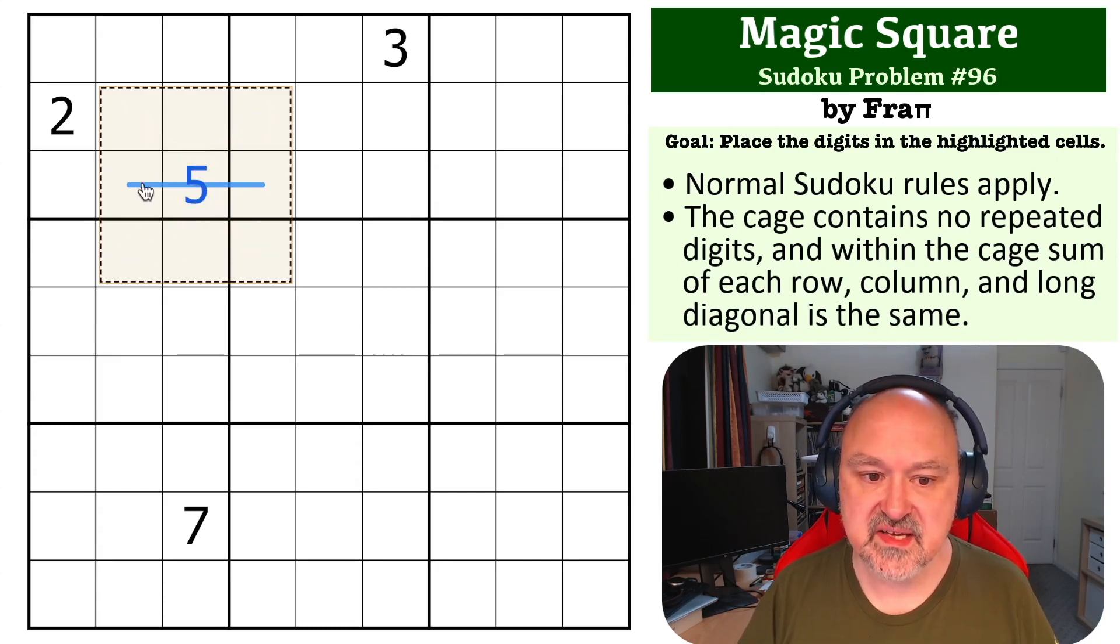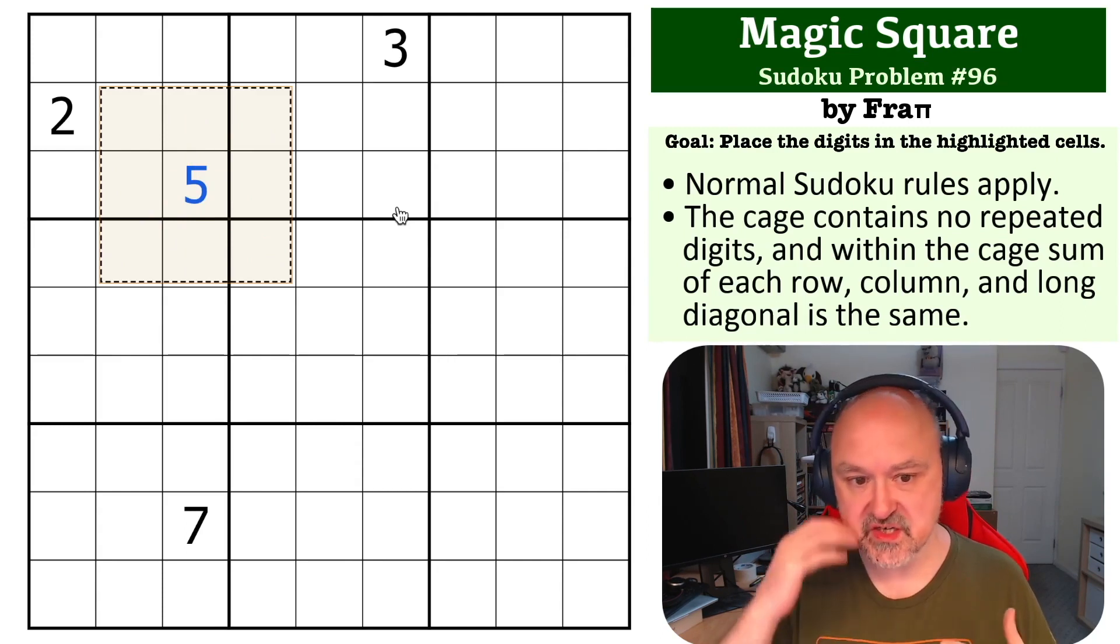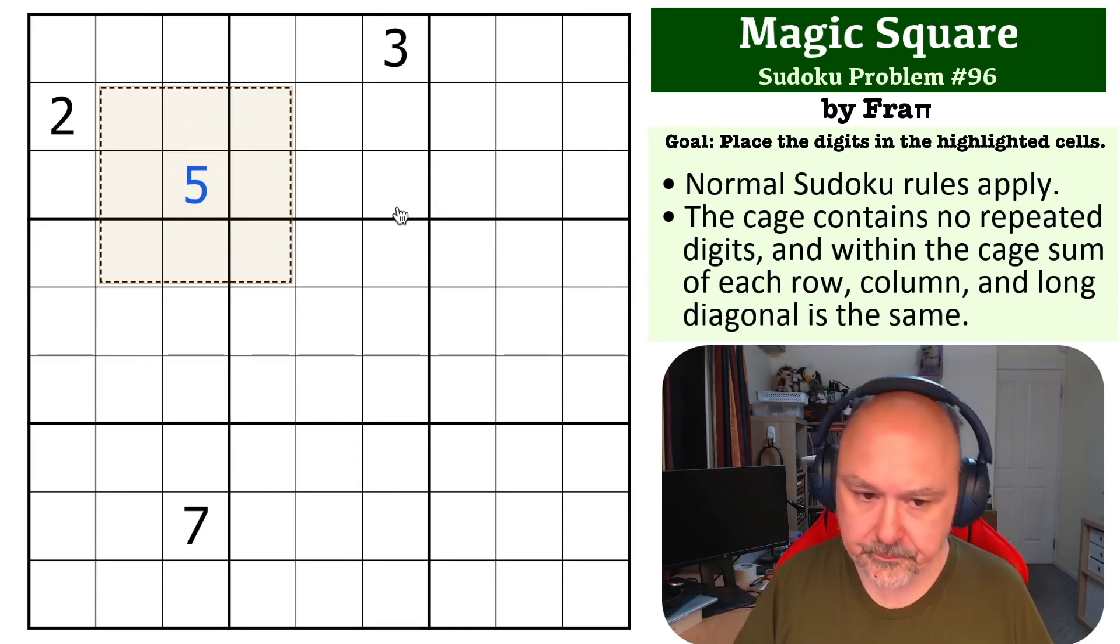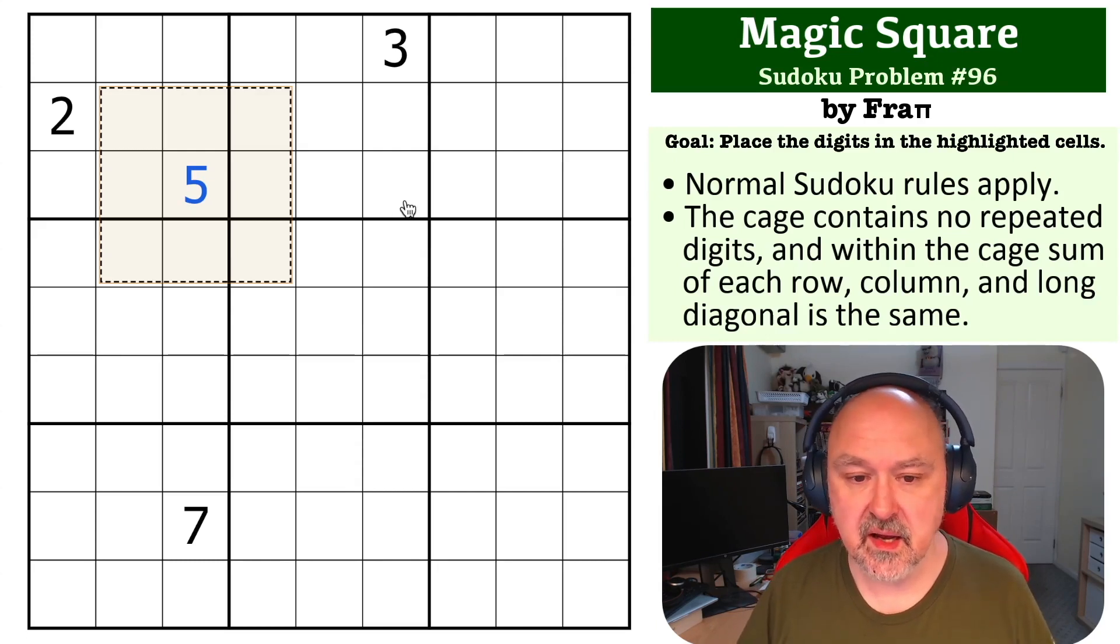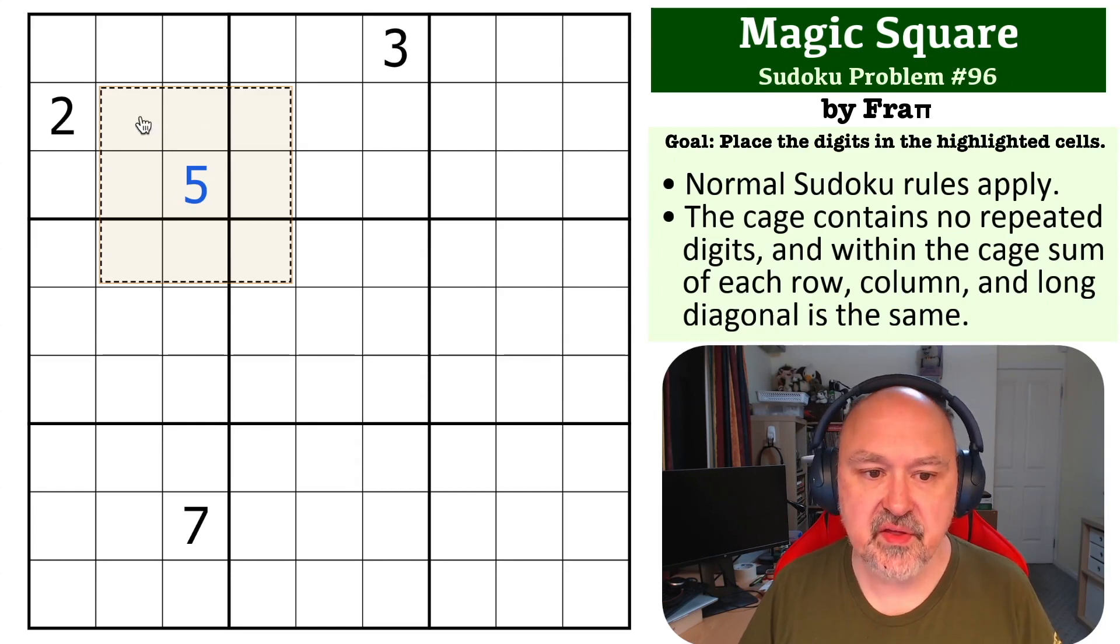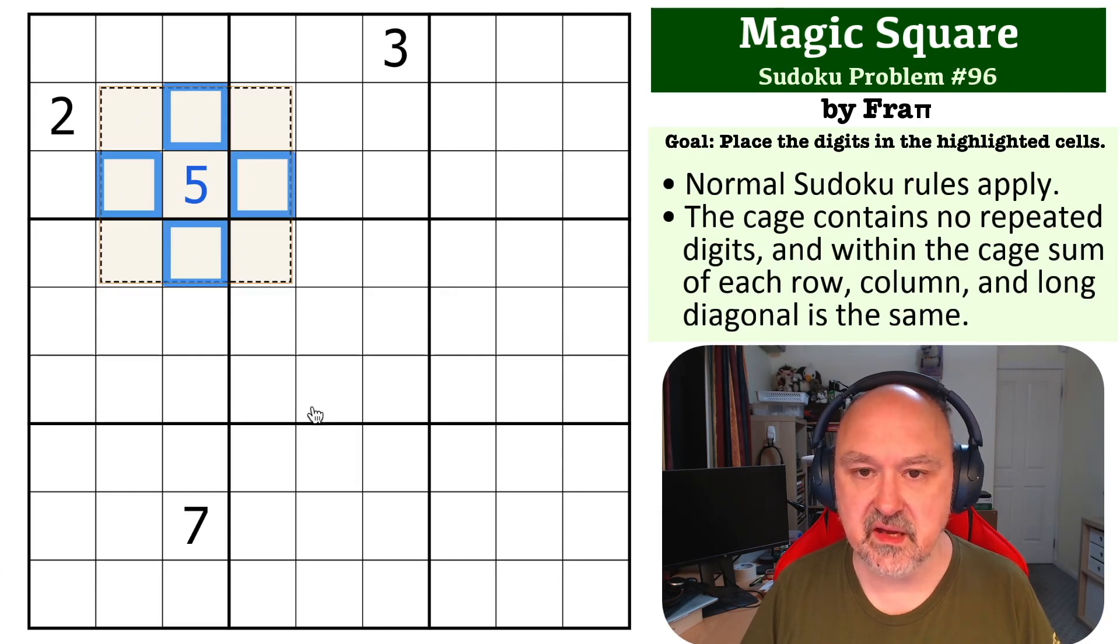So you get a five in the middle. When you see people solving magic squares, they will immediately just put a five in the middle because that's just something we're taught. The next trick, and I'm going to try and explain this, is that the digits in the corner are going to be even, and the digits orthogonally adjacent to the five are going to be odd.